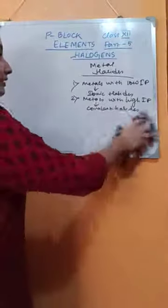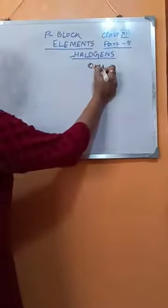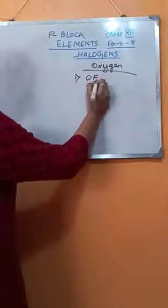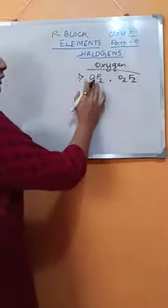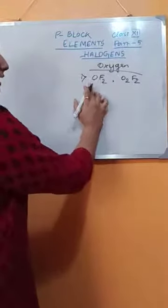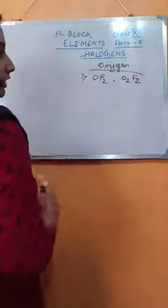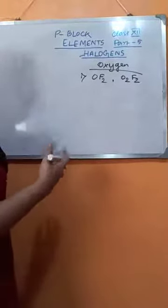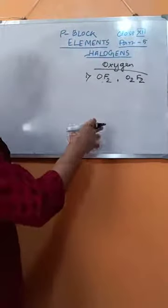The next part is the reaction with oxygen. In case of fluorine, two compounds are formed. Remember one thing: for fluorine, since the electronegativity of fluorine is more than that of oxygen, they are known as oxygen fluorides - oxygen difluoride (OF2) and dioxygen difluoride (O2F2). For other halogens, they are known as iodine oxides, chlorine oxides, etc., because for other halogens the electronegativity of oxygen is more than that of the halogen. But fluorine's electronegativity is more than that of oxygen, so these two are named as oxygen fluorides.